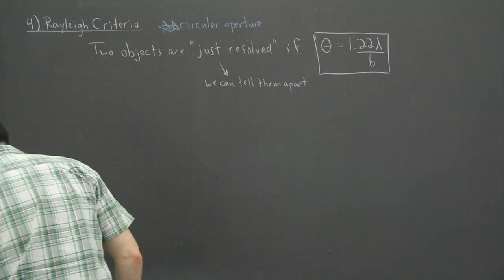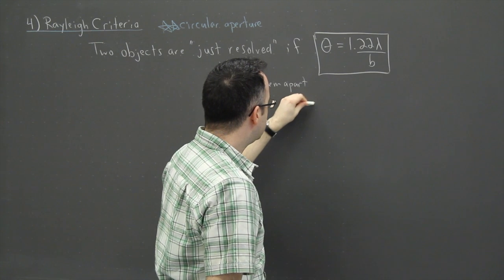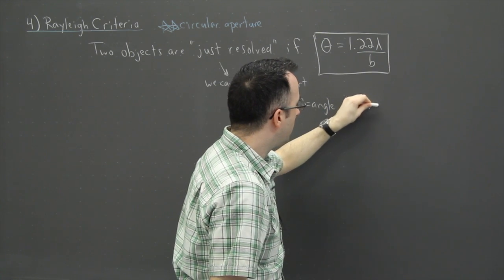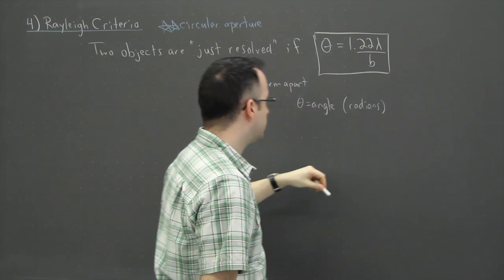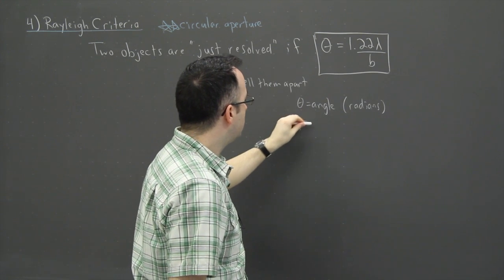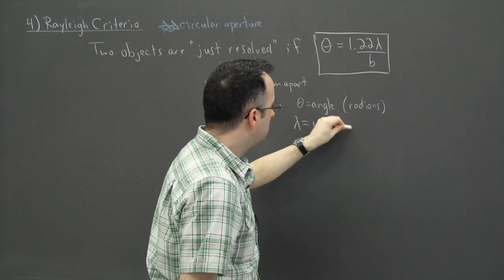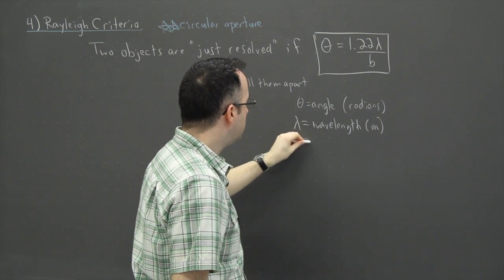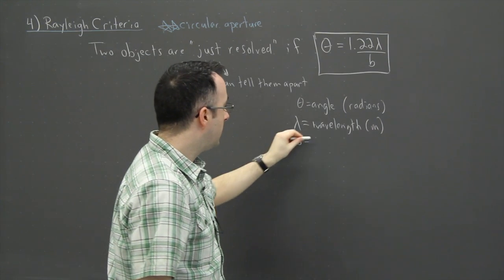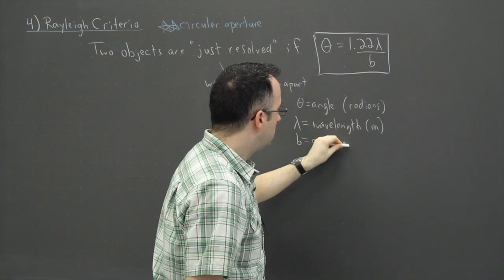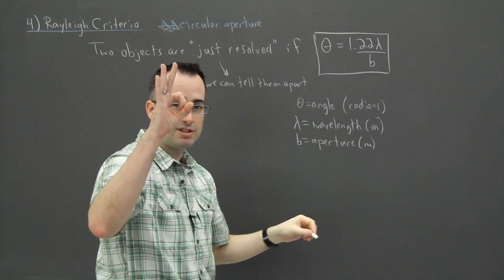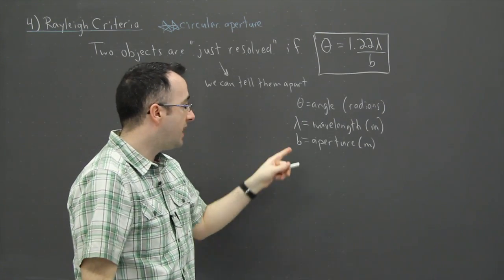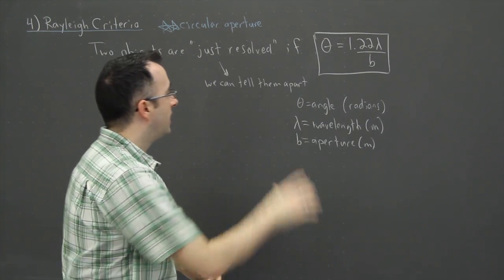So maybe I'll define these things just to be careful here. So theta is the angle and that's measured in radians. Theta is the wavelength of light. Of course, that's measured in meters. And b now is no longer the slit width, it's the aperture. And what I mean by that is the size of the circular hole. So there's a little hole here. How wide is that? So that's the aperture or the opening, the hole.